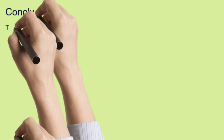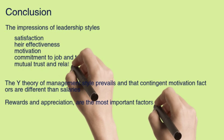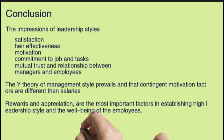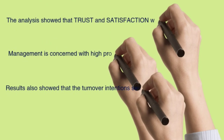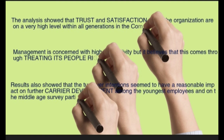In conclusion, impressions of leadership style are related to employee satisfaction, effectiveness, motivation, commitment to job and task, mutual trust, and relationship between managers and employees. This shows that Theory Y management style prevails and that contingent motivation factors beyond salary — such as rewards and appreciation — are the most important factors in establishing high leadership quality and employee well-being. The analysis showed that trust and satisfaction within the organization are at a very high level across all generations. Management is concerned with high productivity but believes this comes through treating its people right. Results also showed that turnover intentions have a reasonable impact on further career development among the youngest employees and middle-aged survey participants.